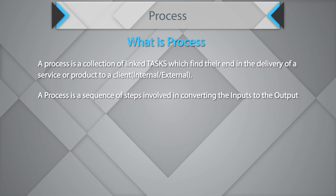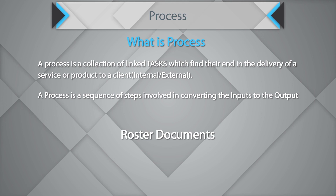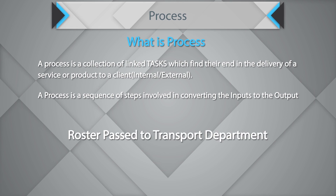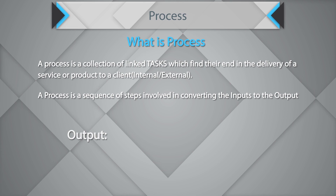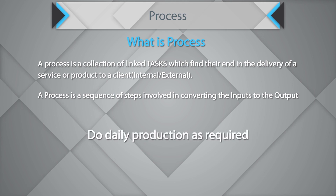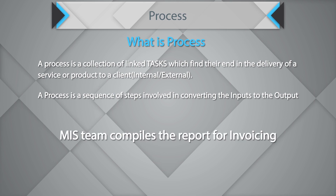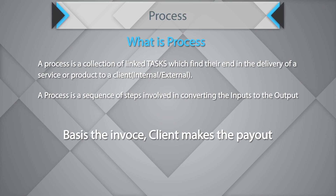Let's look at a series of processes. In a BPO, a scheduling process handled by an assistant manager creates a roster — an Excel sheet — passed to the transport department, who creates pickup and drop lists, which is the input to the cab driver for picking up people. As an output, the pickup process gets people to the office on time. The production MIS team compiles production information and sends it to the client or finance team for invoicing, and the invoice sent to the client prompts payment to the organization.